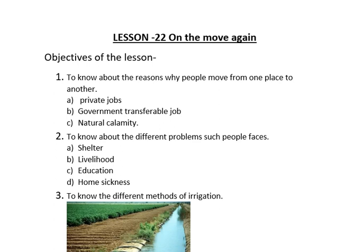Now for the second objective — the different problems faced by people who move. The first problem is shelter: where will we live and stay with our family? This is the most common problem. The second problem is livelihood. If you are in a private job you must seek another job, but if you are in a government job with a transfer, livelihood and shelter are relatively easier to arrange.